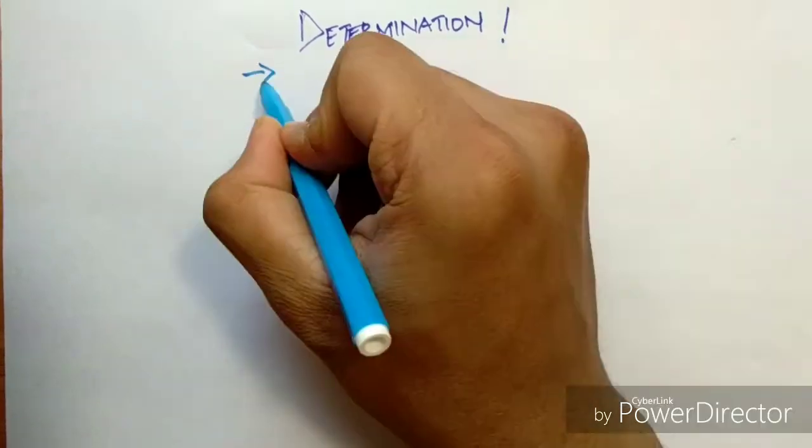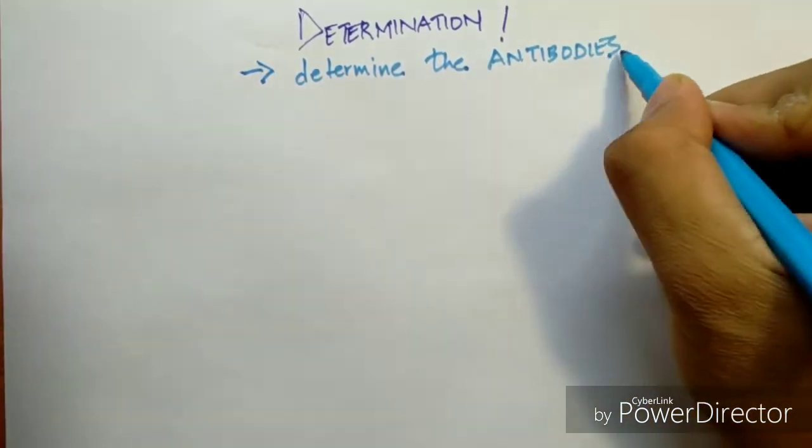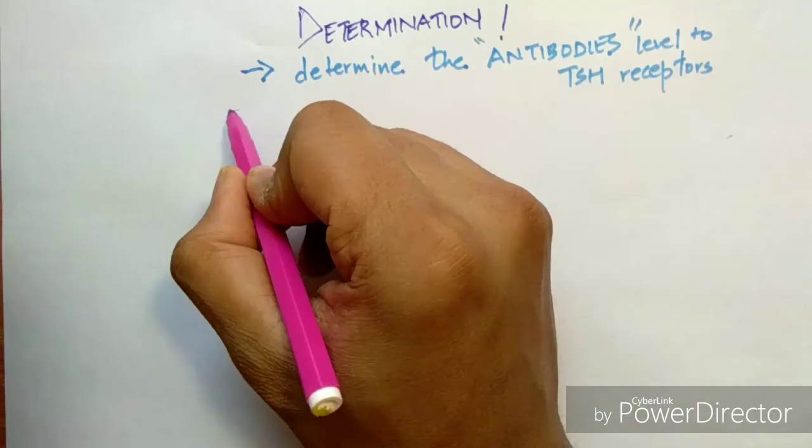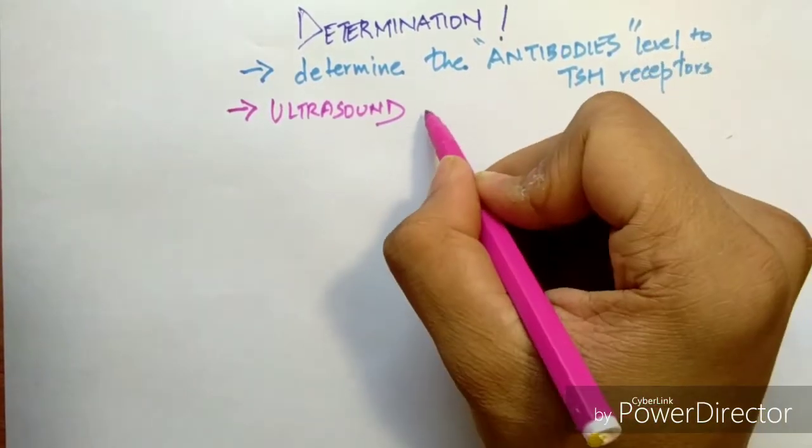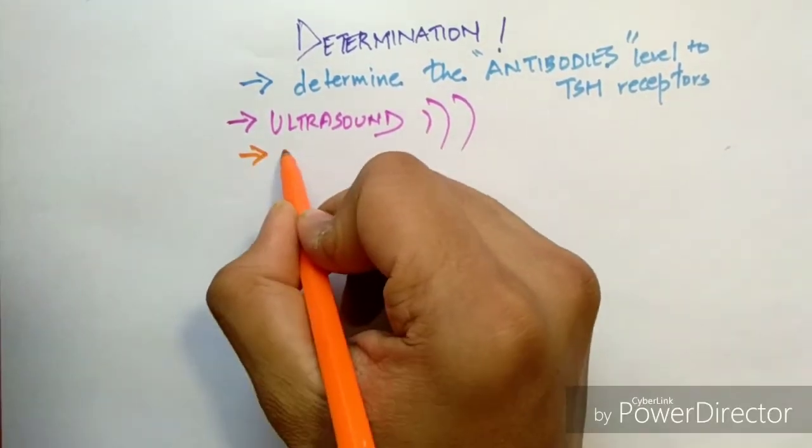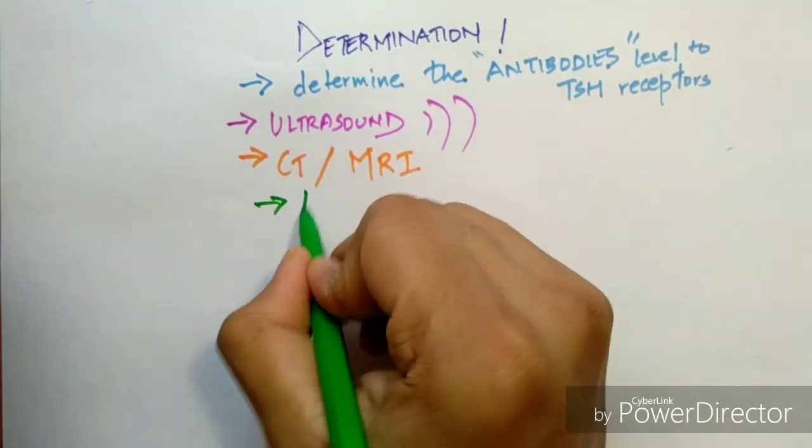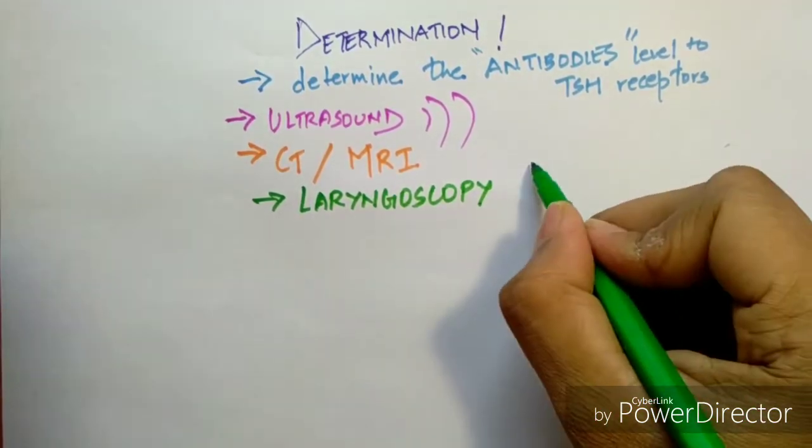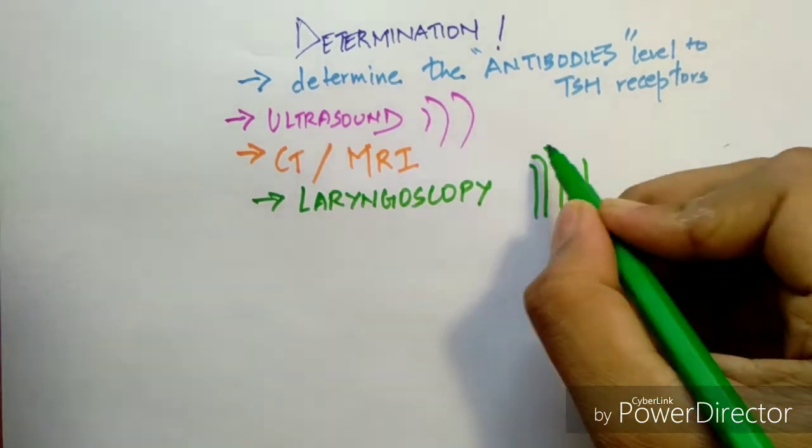Which methods we use: first is determination of the level of antibodies with the receptors in TSH. Second is ultrasound to check the volume of the nodes. Third is CT or MRI. And fourth is laryngoscopy, where a tube is inserted with a scope inside to check the neighboring organs around the larynx.